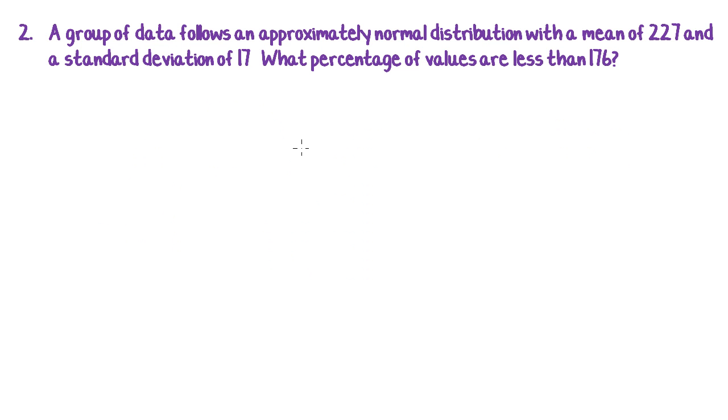So here's the next question. A group of data follows an approximately normal distribution, there's my keywords to mean that we're going to use this rule, with a mean of 227 and a standard deviation of 17. What percentage of values are less than 176?